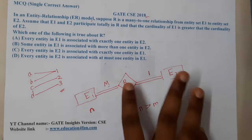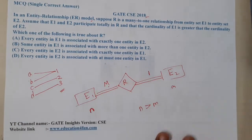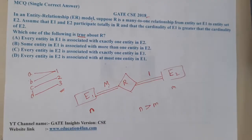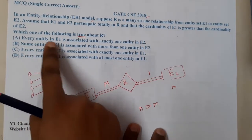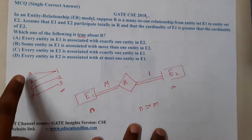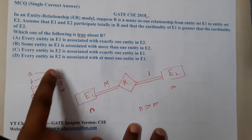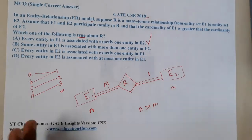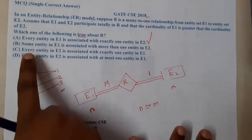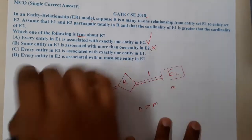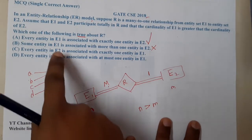From this diagram and example it becomes easy to analyze the answer. Option A says every entity in E1 is associated with exactly one entity in E2. Looking at our example: A maps to one, B maps to one, C maps to two, D maps to three — this matches the many-to-one pattern with no issue. Option B says some entity in E1 is associated with more than one entity in E2, which is absolutely wrong for a many-to-one relation.